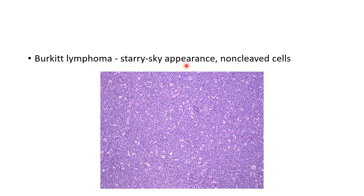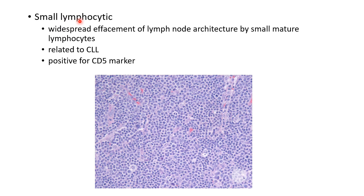In Burkitt lymphoma, the lymph node will show starry sky appearance. This is because of non-cleaved cells. This picture shows the non-cleaved cells in Burkitt lymphoma giving it a starry sky appearance.